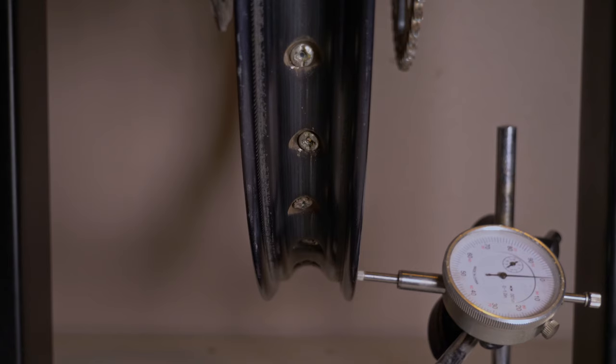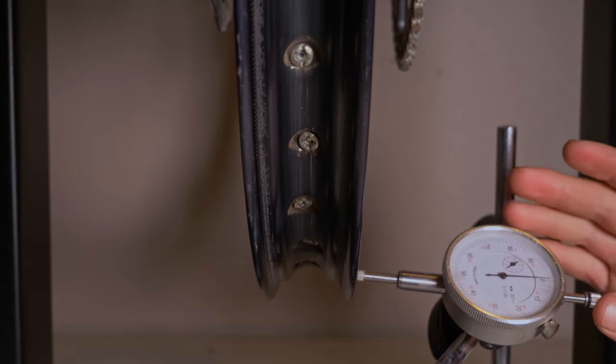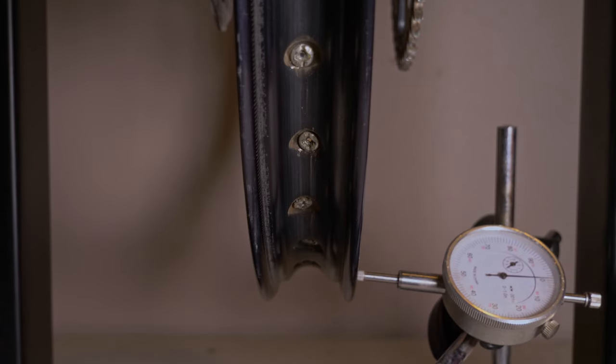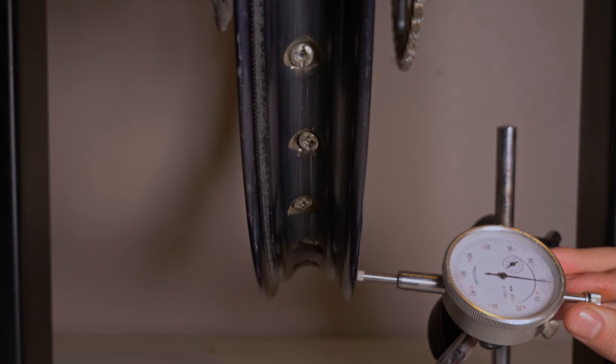So the first step of this process is to figure out how bad your rim is. A quick overview of the dial gauge: the full travel of this dial gauge is one inch. One tick mark is a thousandth of an inch. Ten tick marks is a hundredth of an inch. And the full rotation from zero to a hundred is a tenth of an inch.